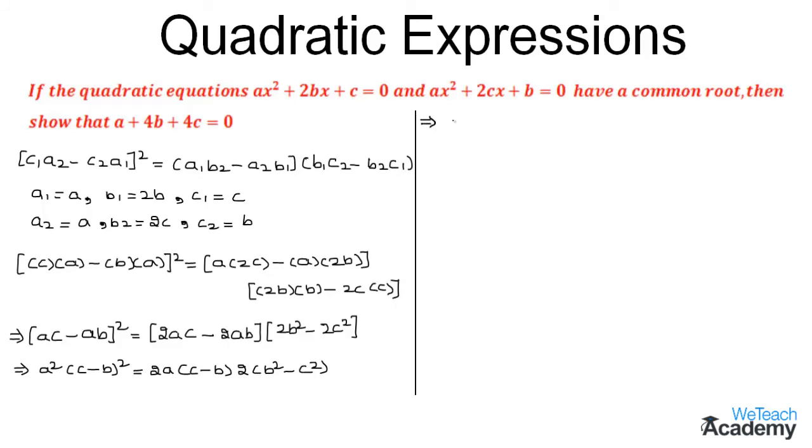Again in the next step we can write a²(c - b)² as a²(c - b)(c - b). So we get (c - b)(-1)(b - c) = 2a(c - b) into (b + c)(b - c). We can cancel (b - c) on both sides. Similarly the terms (c - b) and a also get cancelled on both sides.